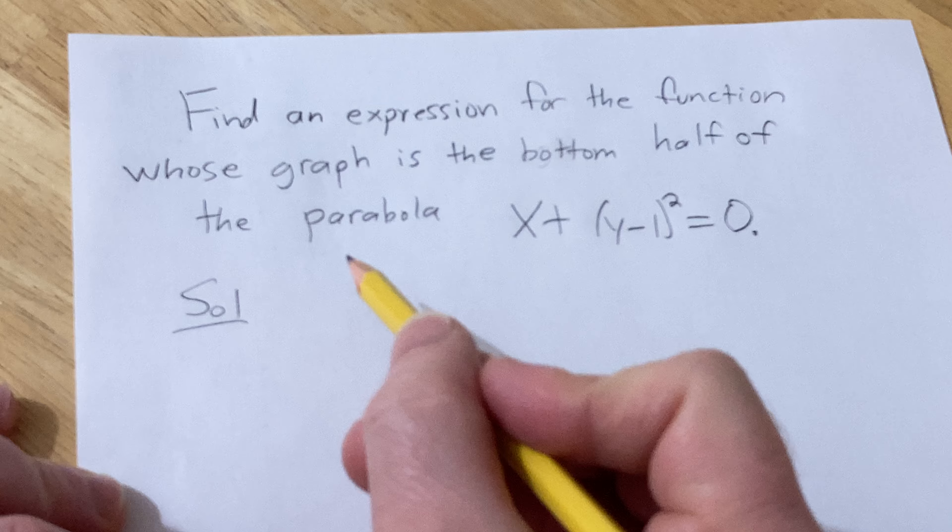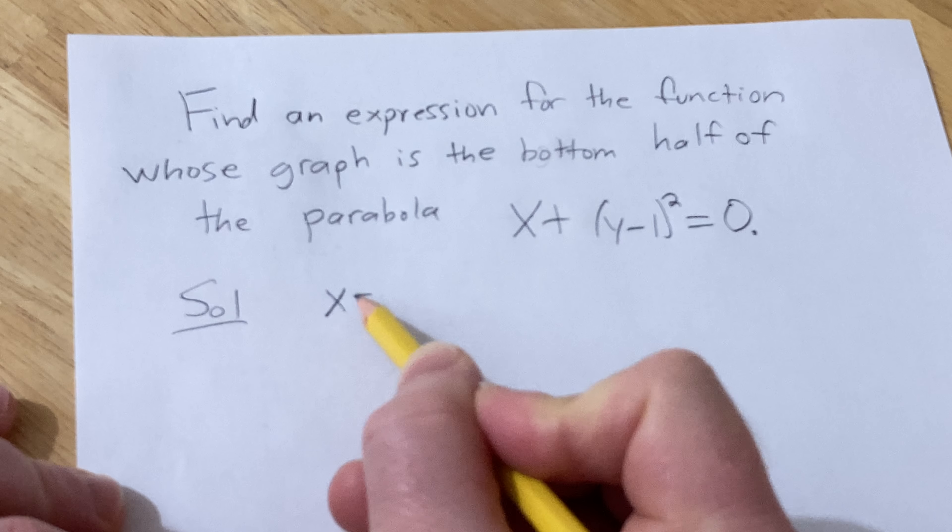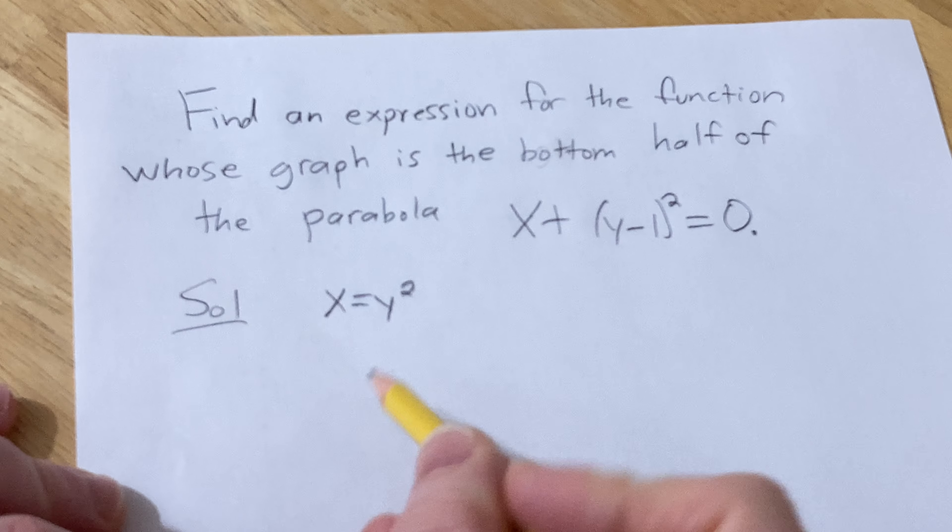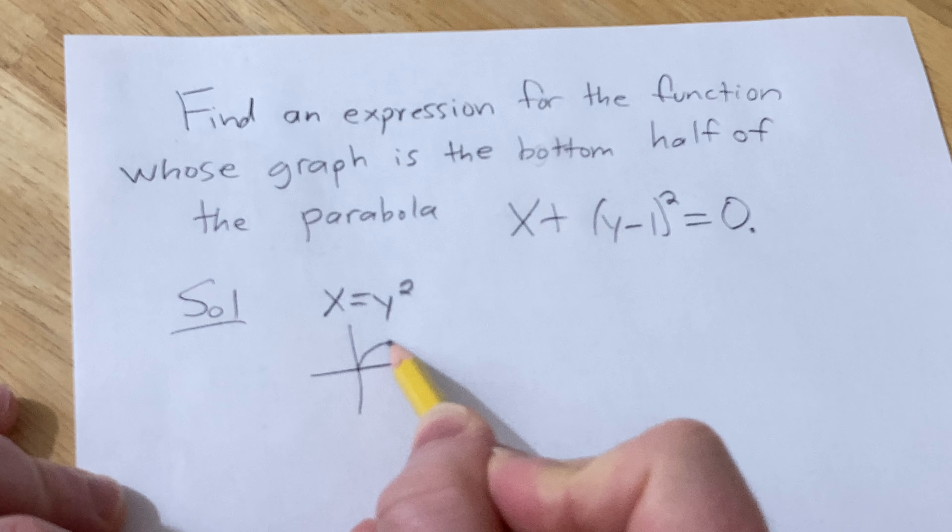So as a simpler example, let's say you had x equals y squared. This is a parabola that opens right and it looks something like this.